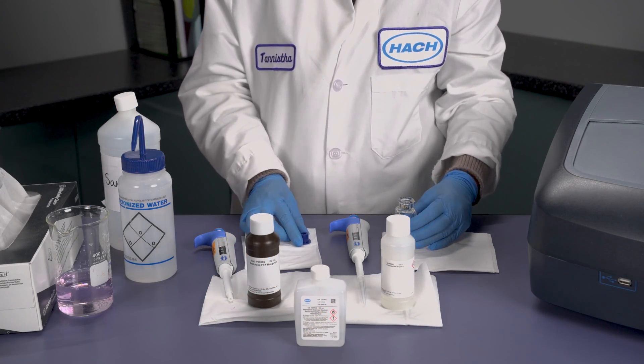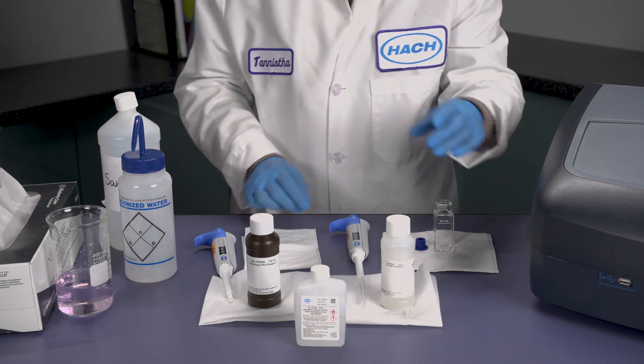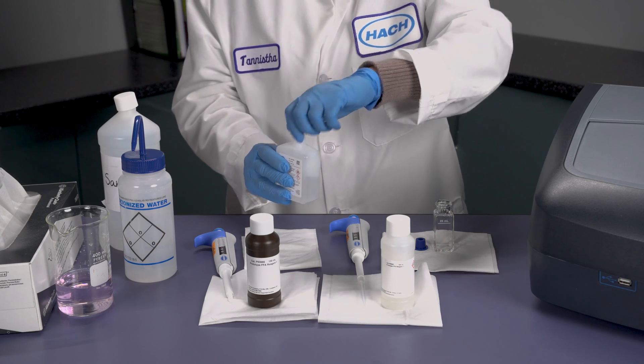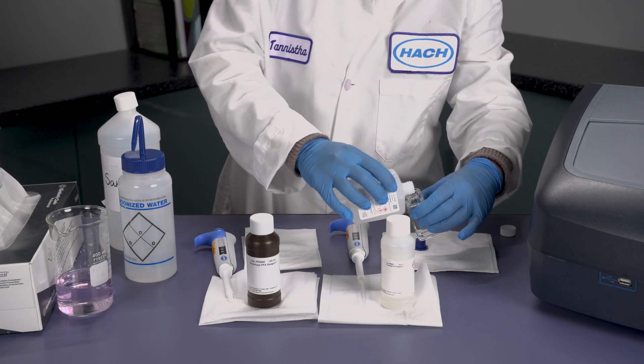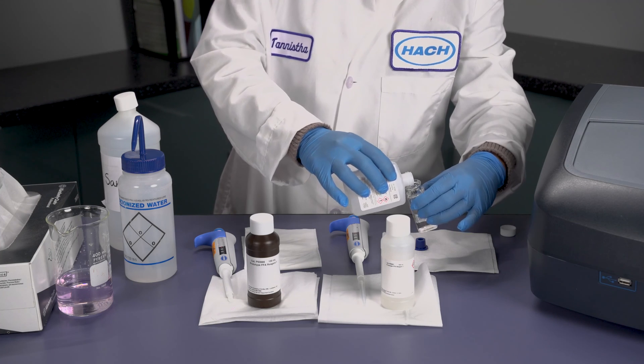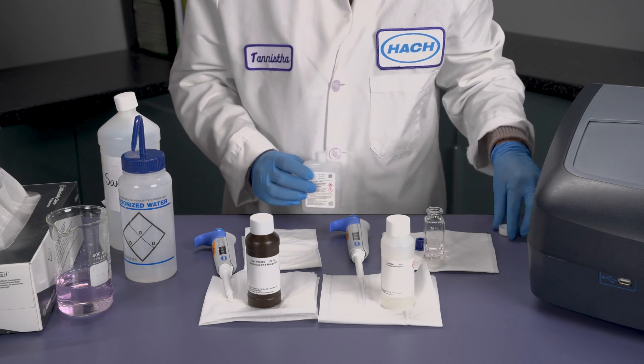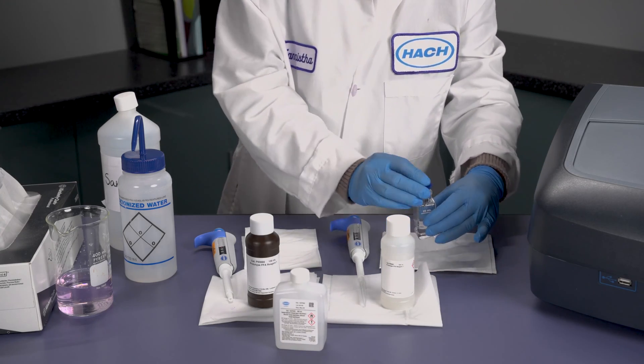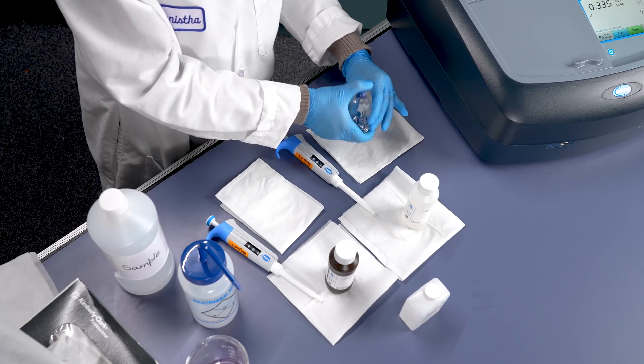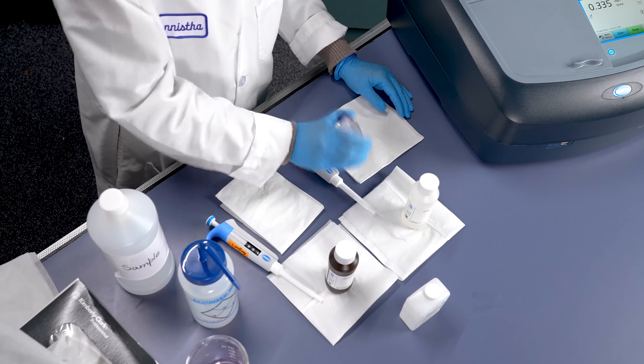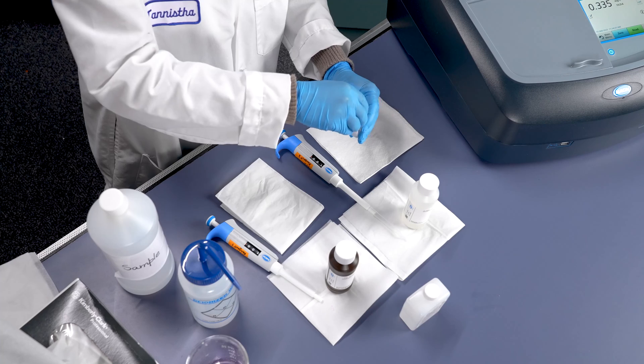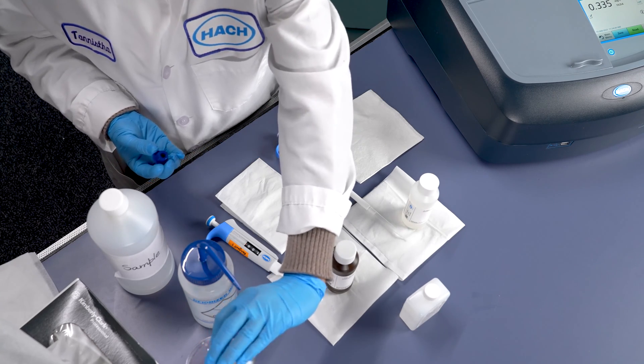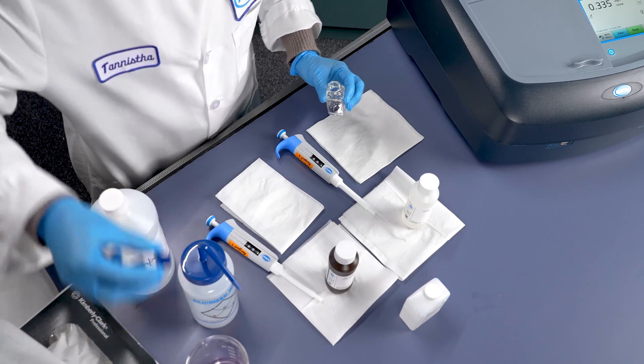After rinsing with deionized water, you now want to add isopropyl alcohol to the sample cell. Add about one-fourth of the volume of the sample cell with the isopropyl alcohol. Again, place on the stopper and shake vigorously.